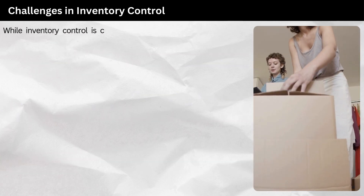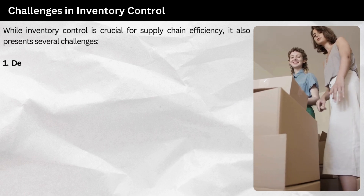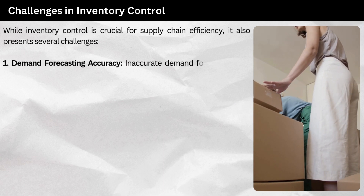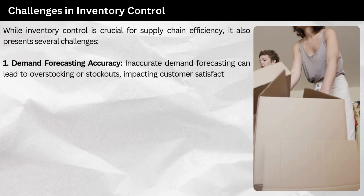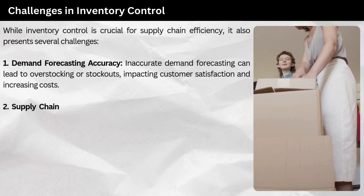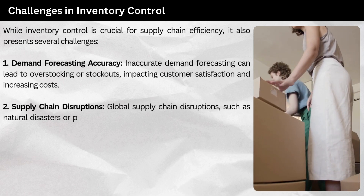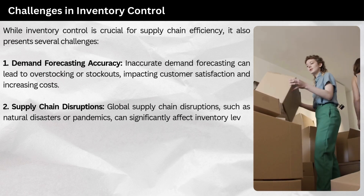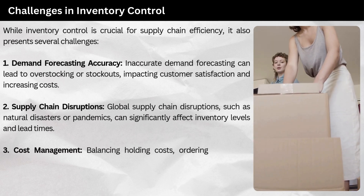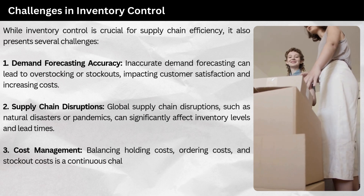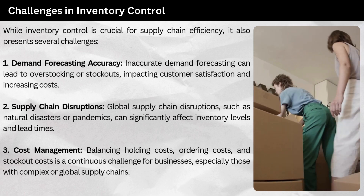While inventory control is crucial for supply chain efficiency, it also presents several challenges. 1. Demand forecasting accuracy — inaccurate demand forecasting can lead to overstocking or stockouts, impacting customer satisfaction and increasing costs. 2. Supply chain disruptions — global disruptions such as natural disasters or pandemics can significantly affect inventory levels and lead times. 3. Cost management — balancing holding costs, ordering costs, and stockout costs is a continuous challenge for businesses, especially those with complex or global supply chains.